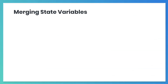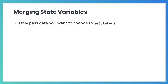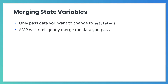If your state contains more than one state variable, you'll only need to pass the data you want to change to the setState method. AMP will intelligently merge the JSON object, which contains the updated data, into the existing state. This means that there's no need for you to merge the values yourself or pass every state variable every time you call setState.